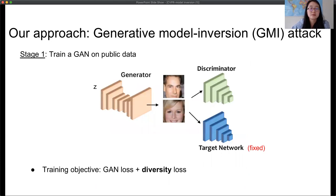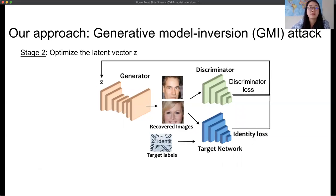Our approach consists of two steps. The first step is to train a GAN on public data. To ensure the GAN is useful for generating realistic private images in the later step, it is important to ensure the diversity of images generated by the GAN is very high. So our training objective contains two terms: one is the canonical WGAN loss, and another is to encourage diversity. The second step aims to find the latent vector that achieves highest likelihood under the target network while being constrained to the data manifold learned by the GAN. The training objective in this step is the sum of discriminator loss and identity loss, which computes the negative log likelihood of the input image. The discriminator loss penalizes unrealistic images, and the identity loss encourages generated images to have high likelihood under the targeted network.